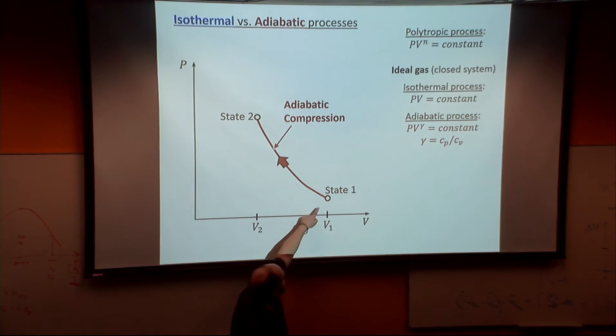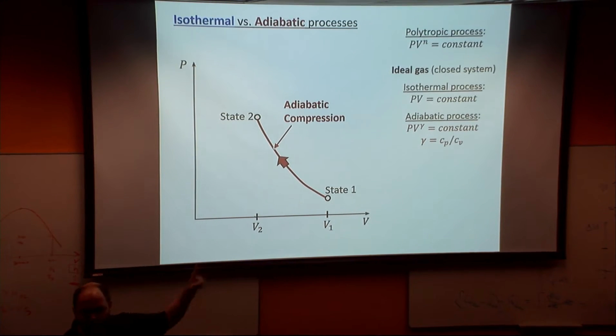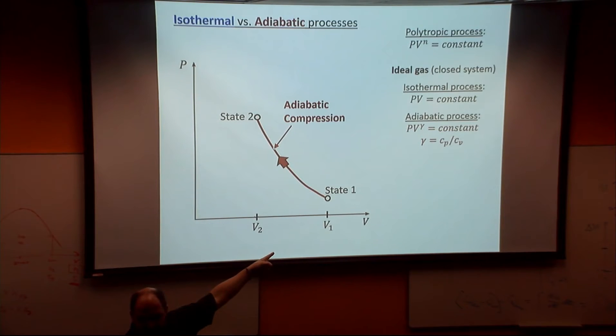I can define this as PV to the gamma. I know it's an ideal gas, so I can look up CP and CV for whatever gas it is. If it's an ideal gas of air, there's a heat capacity, there's that ratio.